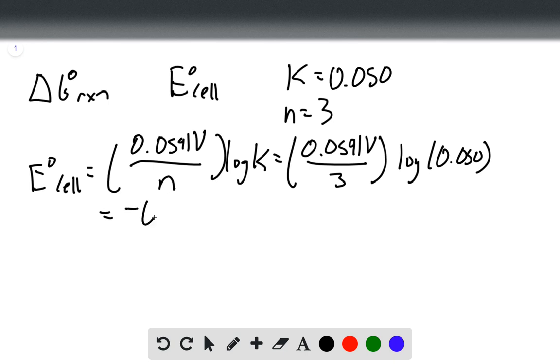That gives us an E cell of negative 0.0256 volts. This is our final answer for E cell.